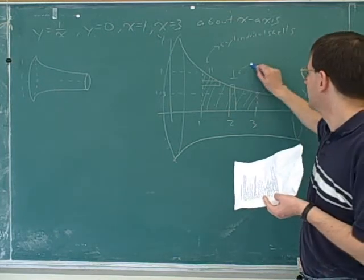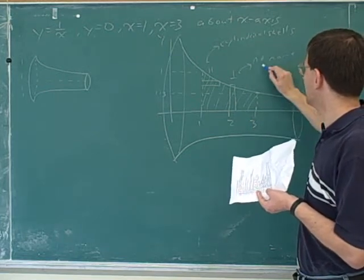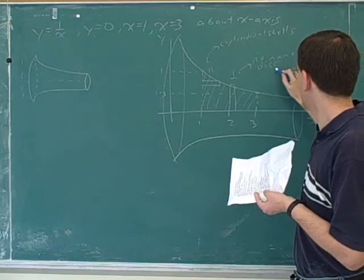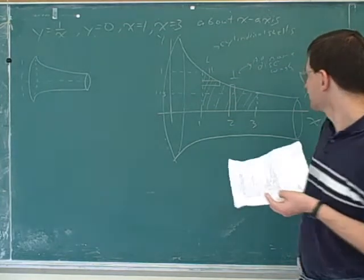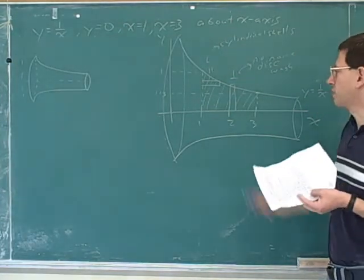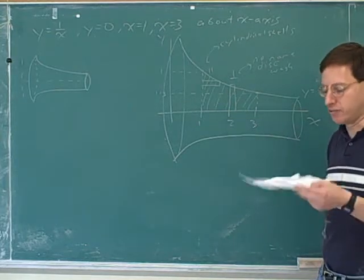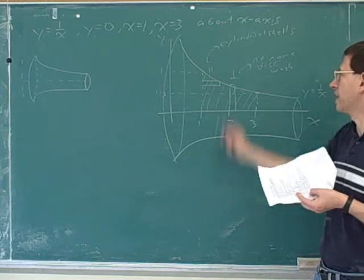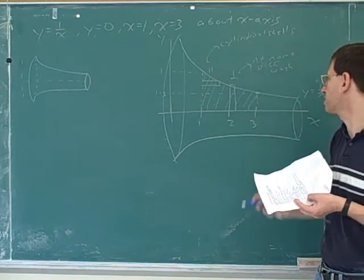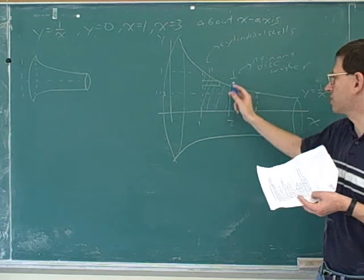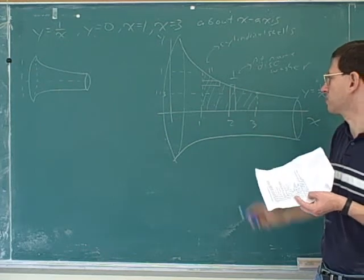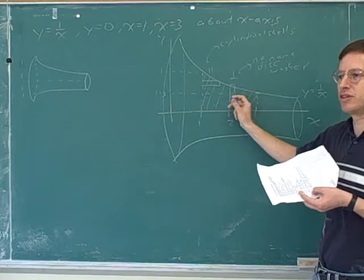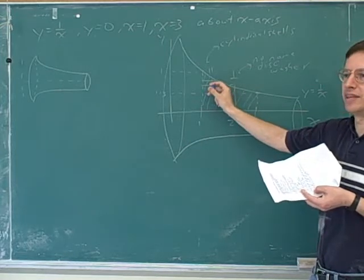The other method — if there's no name given, it could be called the disk or the washer method. That's when the strips are perpendicular to the axis that you're rotating around. Here they did not give us a name, so that was a clue that we're not using cylindrical shells — we're using the disk or washer method, which means we want to use strips that are perpendicular to the axis we're rotating around.